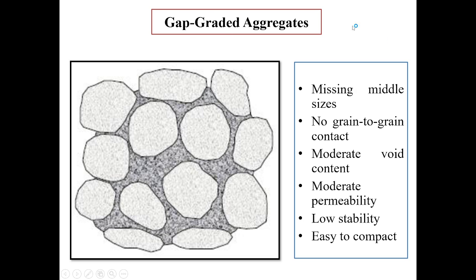Next is gap-graded aggregates. As the name indicates, gap-graded means some middle sizes will be missing. The picture clearly shows that there are larger sizes of aggregate and then very small sizes, and the sizes in between will be missing. Therefore, there is no grain-to-grain contact and the void content is neither very high nor very low, it is moderate. Same is the case with permeability. Permeability is also moderate. The stability is low here. However, these aggregates are somewhat easy to compact.